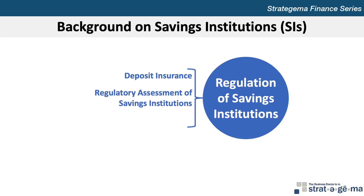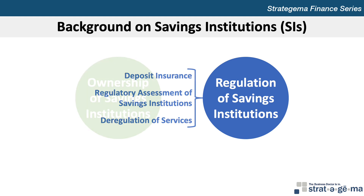Regulators conduct periodic on-site examinations of SIs using the CAMELS rating in a manner similar to commercial banks. In recent years, SIs have been granted more flexibility to diversify the products and services they provide. Many have expanded the scope of their businesses by merging with other businesses specializing in real estate, insurance, and brokerage services.